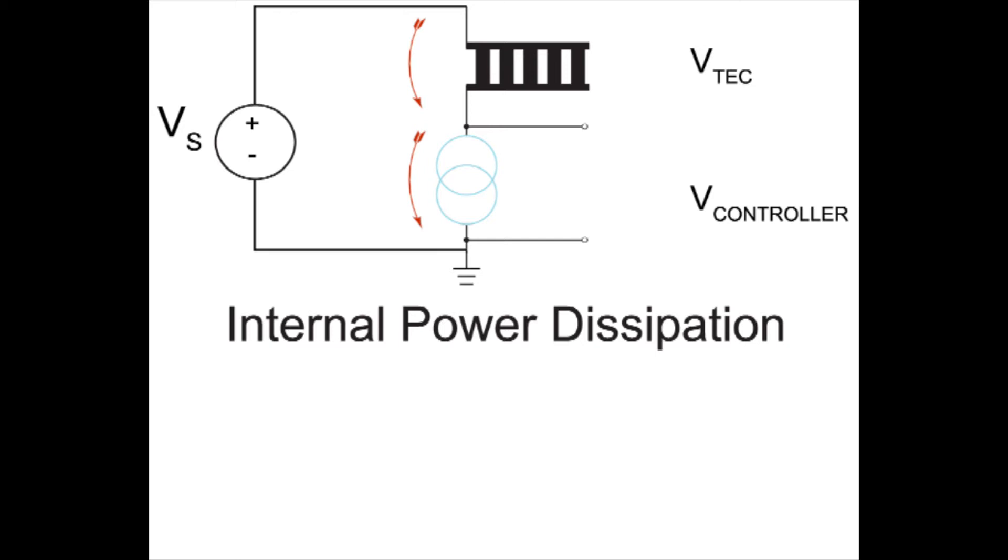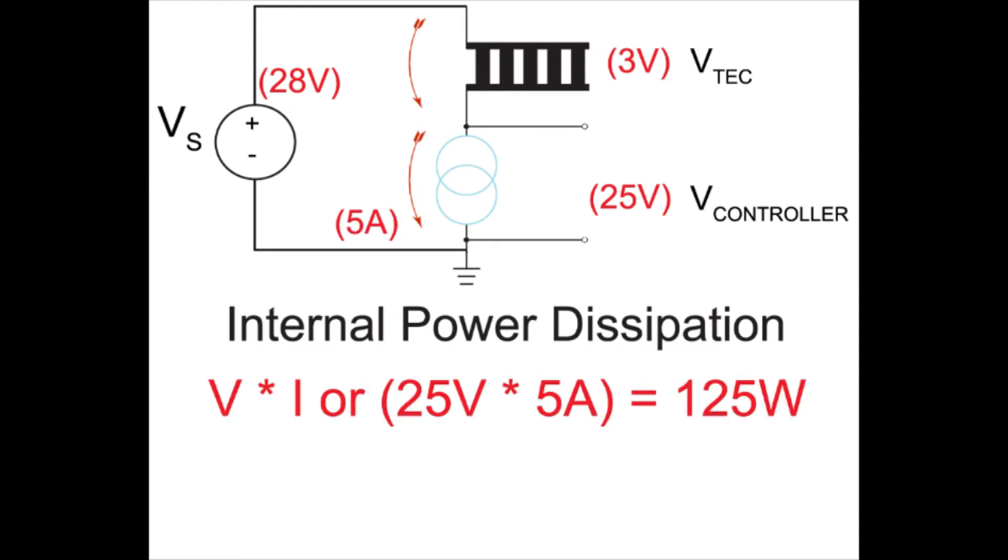Suppose the PTC5KCH is used with a 28-volt supply and a 3-volt thermoelectric. In this case, 25 volts will be dropped across the temperature controller. This means, at 5 amps, the internally dissipated power will be 125 watts. The maximum internal power dissipation of this controller is 60 watts, meaning components will overheat and suffer permanent damage.